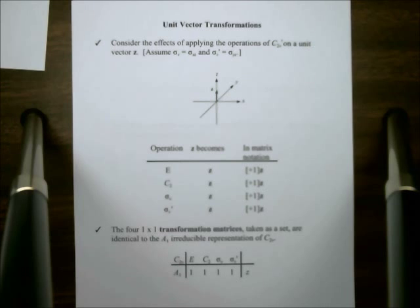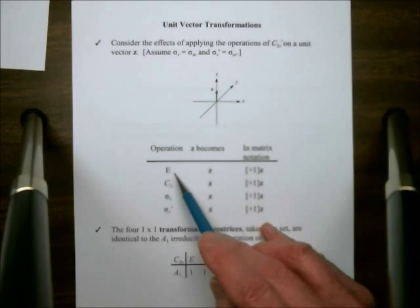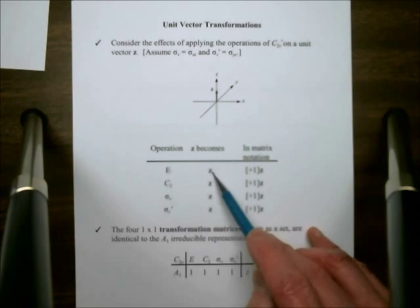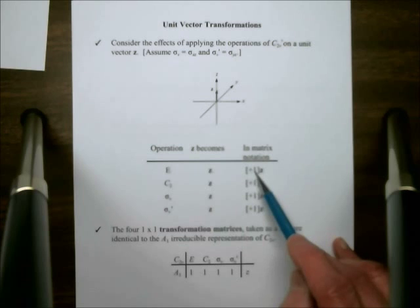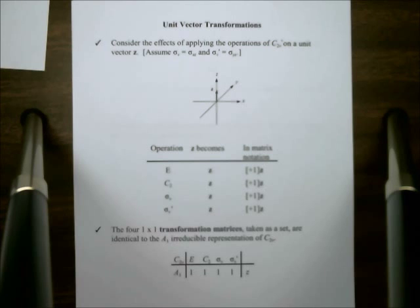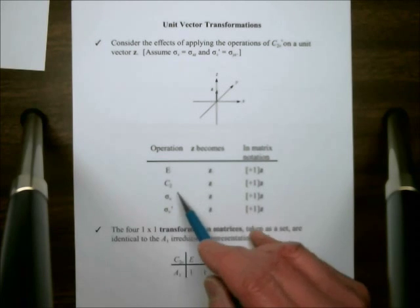What I want to do is ask how does z change, if at all, under the operations E, C2, sigma v, and sigma v prime. And I want to represent those mathematically. This is a one-dimensional problem, so I can represent the transformation of z by multiplying the original position of z by a one-by-one matrix. Basically, it's just a single integer multiplied times z. For example, here is E. E remains z, or rather, z remains itself under E. So I can represent that mathematically by taking z's original position and multiplying it by plus one.